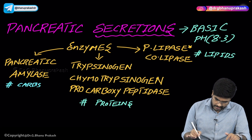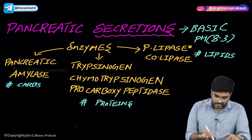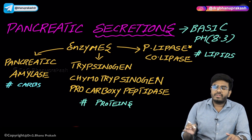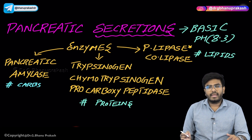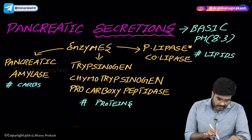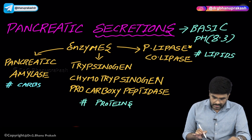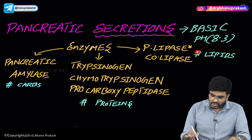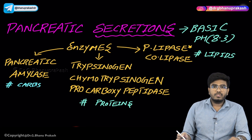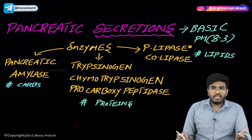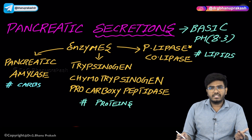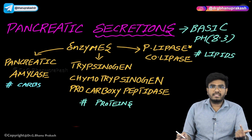Pancreatic secretions contain different types of enzymes that help in digestion of food. There are enzymes for the digestion of carbohydrates, enzymes for the digestion of proteins, and enzymes for the digestion of lipids. So all three — carbohydrates, proteins, and lipids — are digested with the help of pancreatic enzymes.